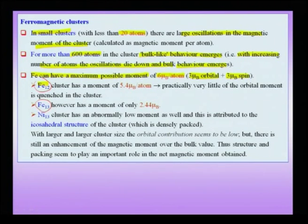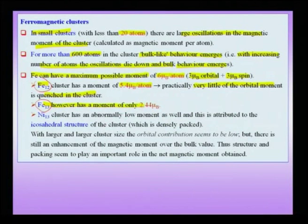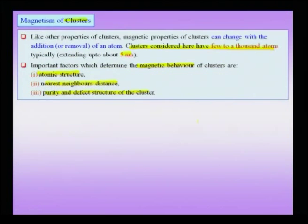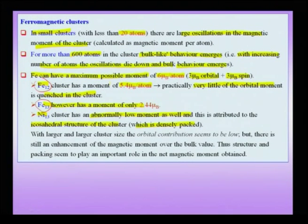The Fe12 cluster has a magnetic moment of about 5.4 μB per atom, meaning very little of the orbital motion is quenched — it approaches the atomic limit. Adding just one more atom to make Fe13, we see a much lower magnetic moment of only about 2.44 μB. This can be attributed to the icosahedral structure of the Fe13 cluster, which is densely packed. The reduced atomic separation means overlap of atomic orbitals, resulting in a reduction in the magnetic moment.